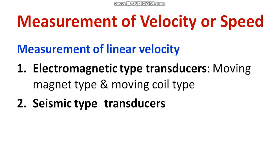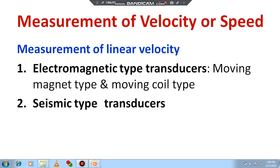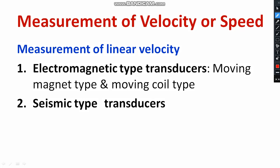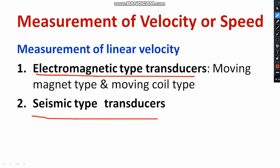There are different methods. In this session, I am going to discuss two popular methods to measure linear velocity. The first method is electromagnetic type transducer, and another method is known as seismic type transducer. Using the seismic type transducer, you can also measure acceleration. Electromagnetic type transducers can be broadly divided into moving magnetic type and moving coil type.